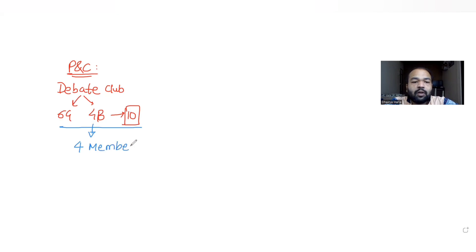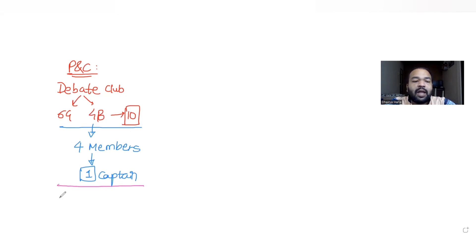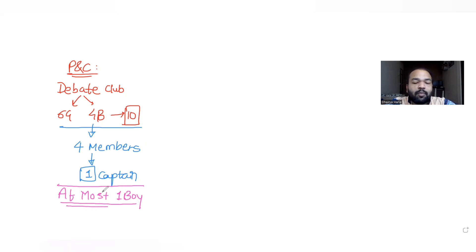After selecting four members, we also need to appoint a captain out of those four members. The question asks: if the team of four members can include at most one boy, in how many ways can the selection be done so that at most one boy is present in the team?